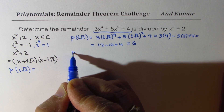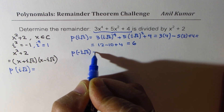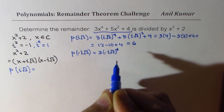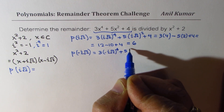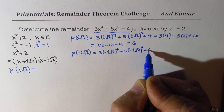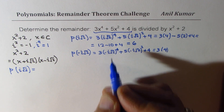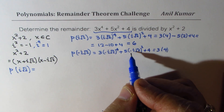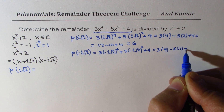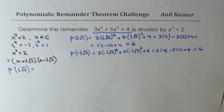Let's also find the value of this polynomial at minus i√2. That would be 3 times (minus i√2) to the power of 4, plus 5 times (minus i√2) squared, plus 4. This part is exactly the same since minus to the power of 4 becomes positive, and minus to the power of 2 also becomes positive. So that is also equal to 6.